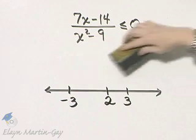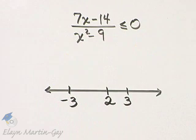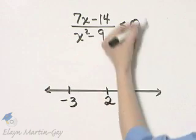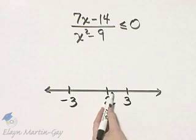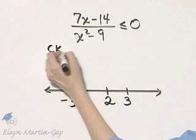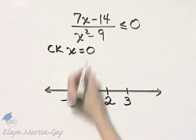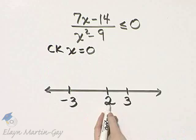So I'll place two appropriately on the number line. Those are the values that go on the number line. And now you check regions in the original inequality. I'll let you check regions. Maybe let's just check zero.